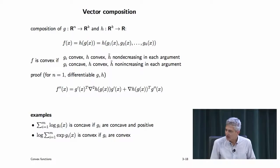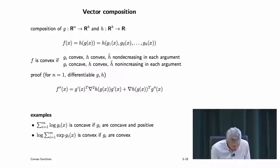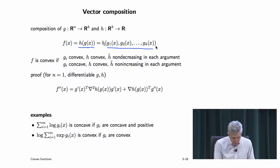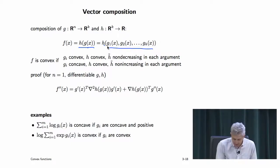There's a vector version when a function takes multiple arguments. This is incredibly important — you'll use it every day for the rest of the quarter. The rule: if h is a convex function of k arguments g_1 through g_k, and for each argument there's a rule about the sign of the partial derivative of h times the convexity/concavity of the corresponding g_i, you can conclude convexity. This is the vector composition rule.